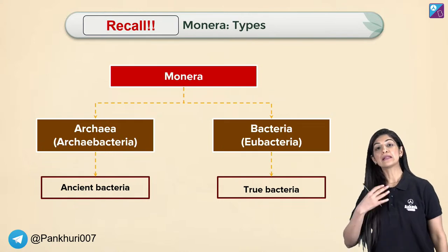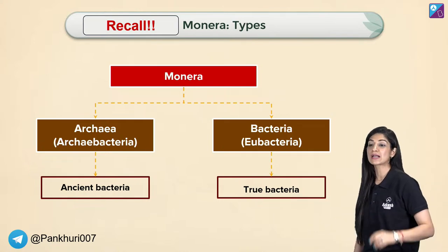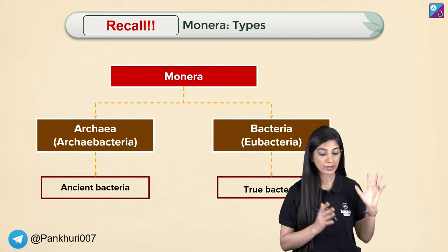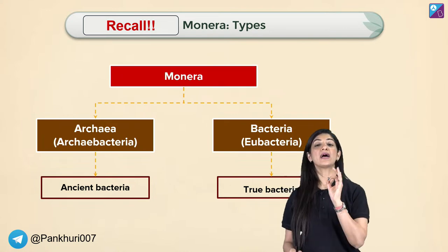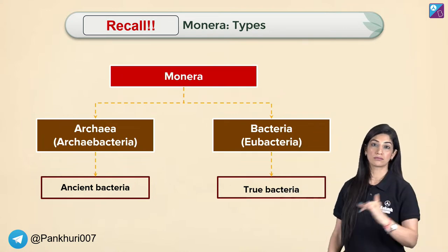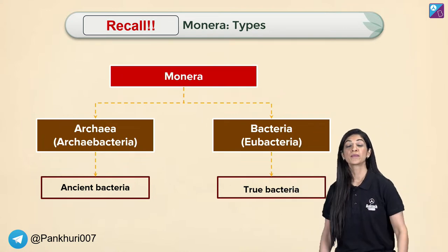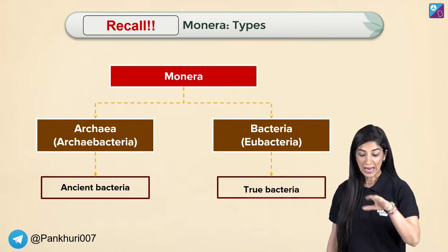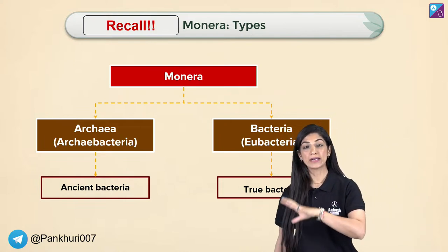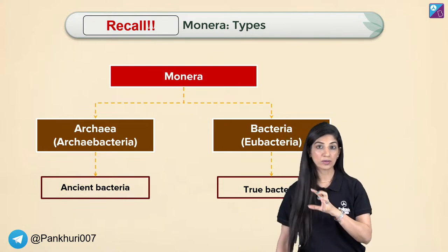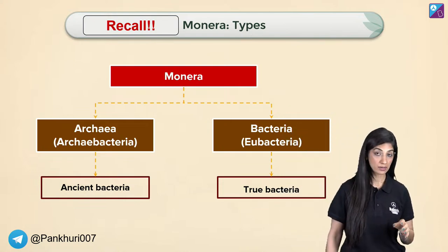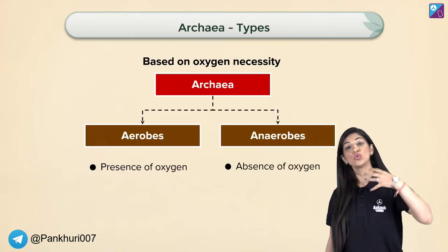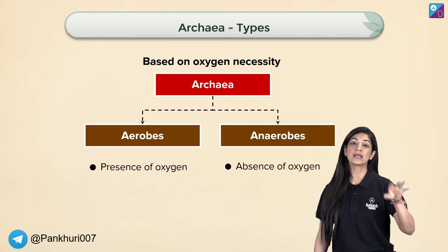In the last class, we classified Monerans into Archae and Eu. Archae means primitive — archaeology. Eu means true — true modern bacteria. Archae bacteria: why are they the way they are? That is very important to know.